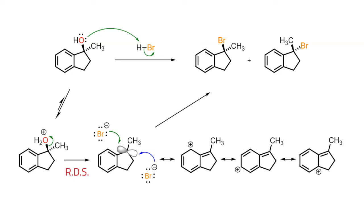Since this planar carbocation is prochiral, attack from either face results in two enantiomeric products.